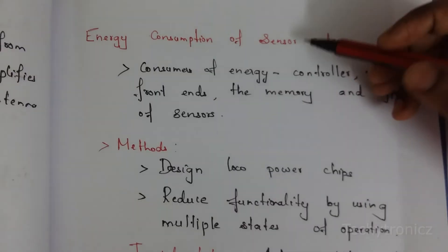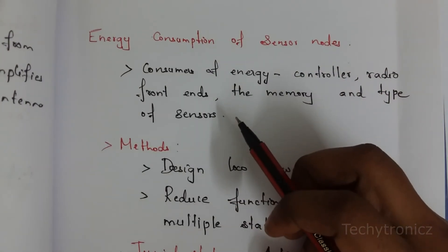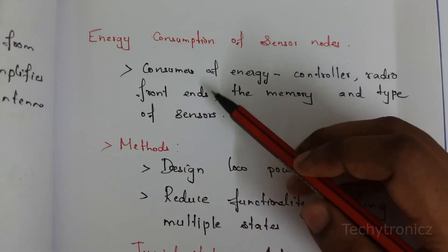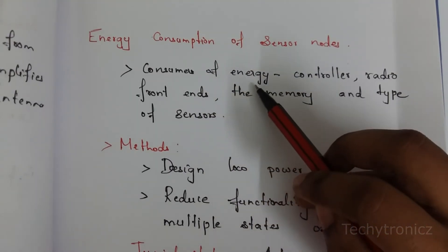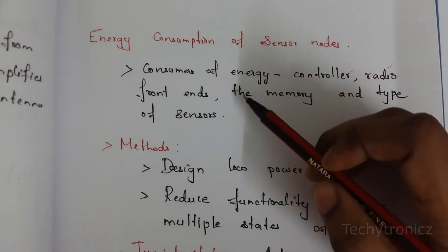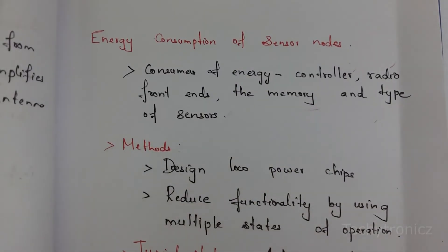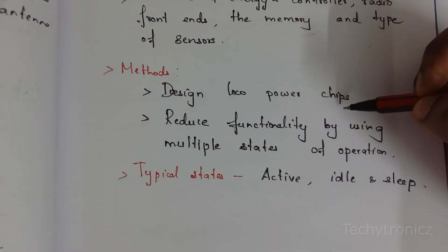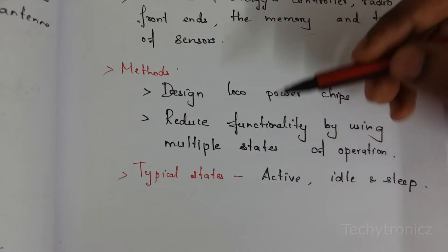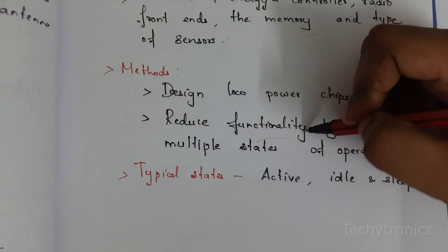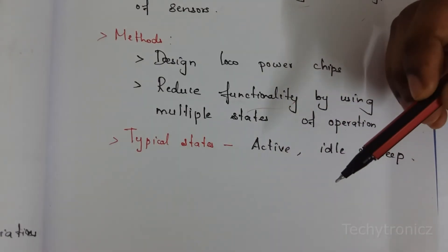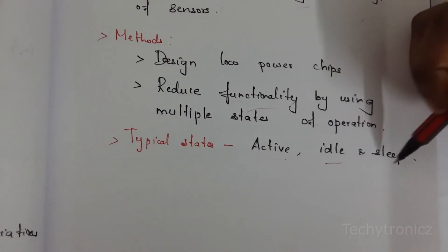The next topic is energy consumption of sensor nodes. When sensors are used, a large amount of energy is consumed, so we need to reduce it for efficient output. Energy is consumed by the controller, radio front end, memory, and the type of sensors used. To reduce consumption, low-power chips are designed and functionality is reduced using multiple states of operations.